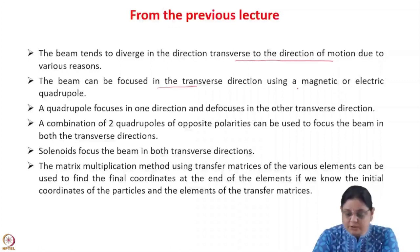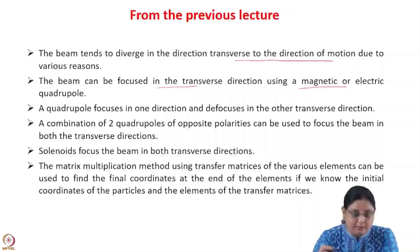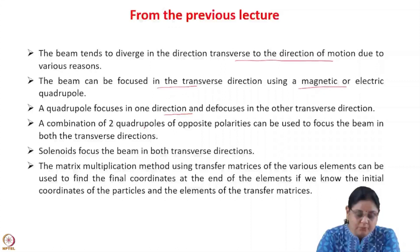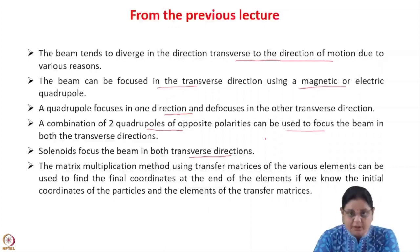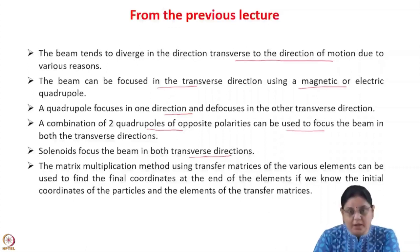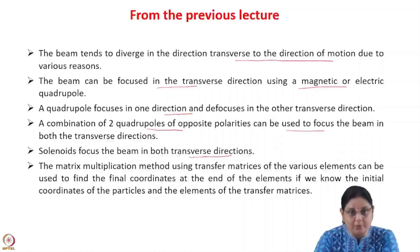The beam can be focused in the transverse direction using a magnetic or electric quadrupole. We learned about the focusing of magnetic as well as electric quadrupoles in the last lecture, and we saw that a quadrupole focuses in one direction but defocuses in the other direction. So you need to use a combination of two quadrupoles of opposite polarities in order to focus in both directions. We also saw how a solenoid focuses the beam in both transverse directions. We derived the transfer matrices from the equation of motion for the focusing quadrupole, the defocusing quadrupole, and for the drift space. Transfer matrices for all elements — whether it is an RF gap, a dipole magnet, or any other system — can be derived using the equation of motion.